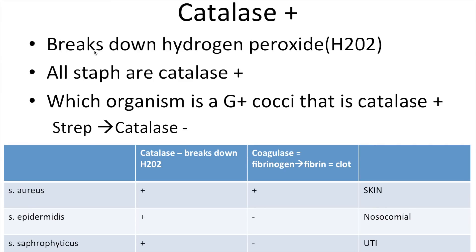Catalase breaks down hydrogen peroxide, and all Staph are catalase positive. You might see a question asking which organism is a gram-positive cocci that is catalase positive, and you'd need to distinguish between Strep and Staph. Looking at Staph aureus, epidermidis, and saprophyticus — all three are catalase positive. Coagulase is a different story: only Staph aureus is coagulase positive, and the other two are coagulase negative.